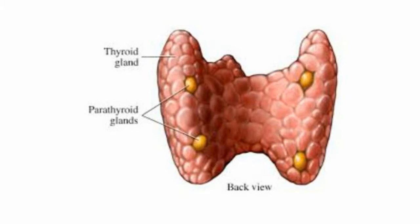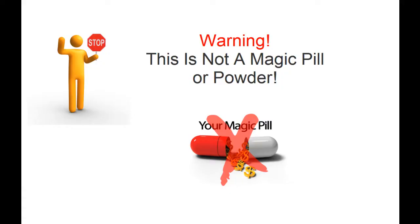The thyroid gland is covered by a thin fibrous sheath — the capsula glandulae thyroideae — composed of an internal and external layer. The external layer is anteriorly continuous with the pretracheal fascia and posterolaterally continuous with the carotid sheath. The gland is covered anteriorly by the infrahyoid muscles and laterally by the sternocleidomastoid muscle, also known as the sternomastoid muscle.